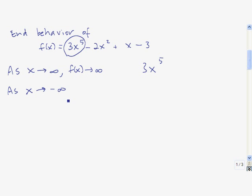Now let's see what happens when x goes to negative infinity. We take a negative number that is extremely large in magnitude — negative a million, negative a billion, negative a trillion — and raise those to the fifth power. When we raise a negative number to an odd power, we get another negative number. So these numbers raised to the fifth power are negative but super huge in magnitude. A super huge negative number multiplied by 3 is still a super huge negative number. So as x gets more and more negative, the polynomial will go toward negative infinity.